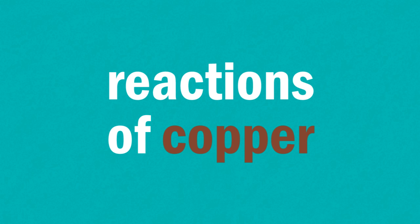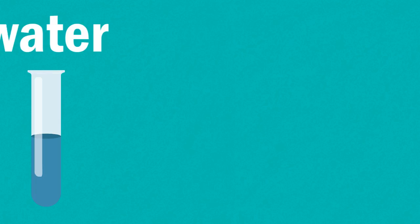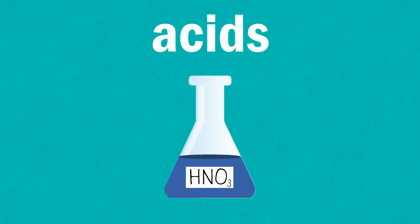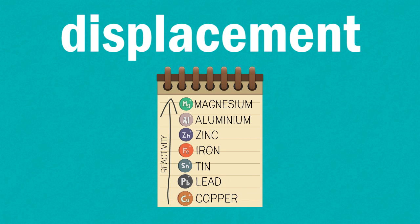In this video we are going to look at the reactions of copper. These will include reactions with air, water, the halogens, acids and its displacement reactions. The most common reaction of copper is the formation of verdigris,